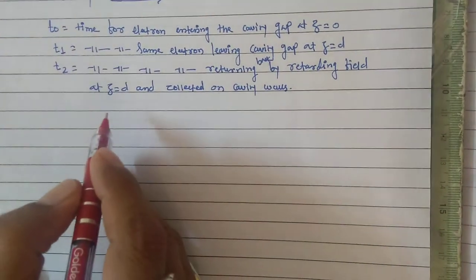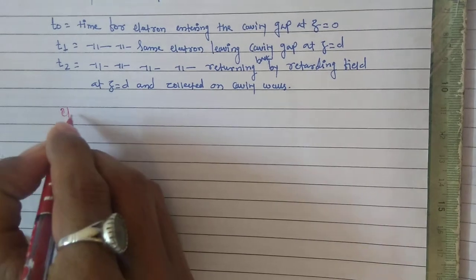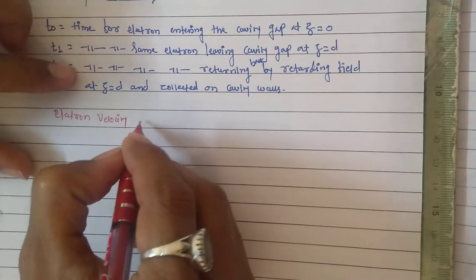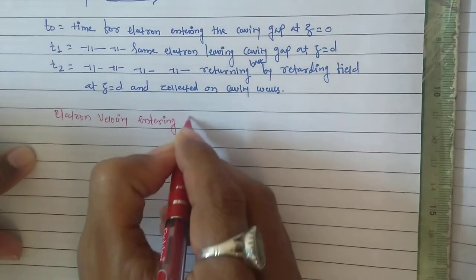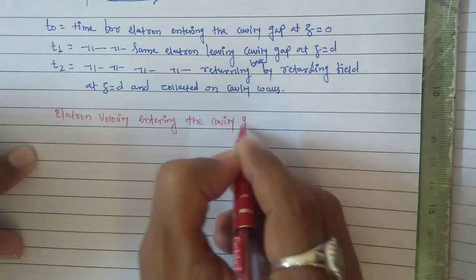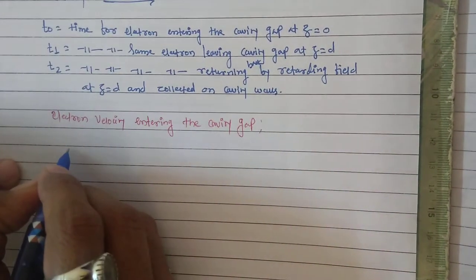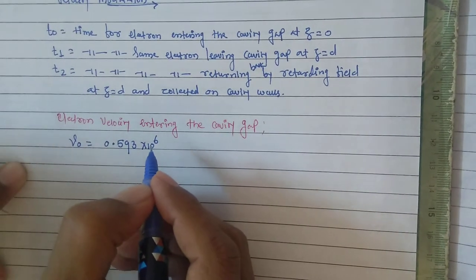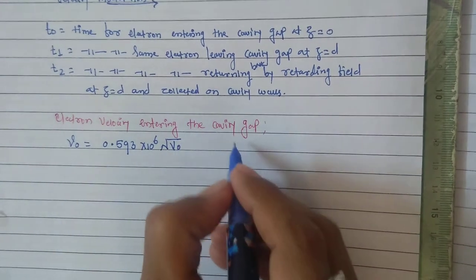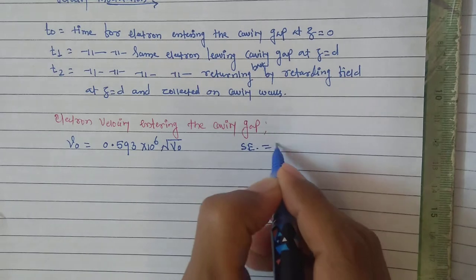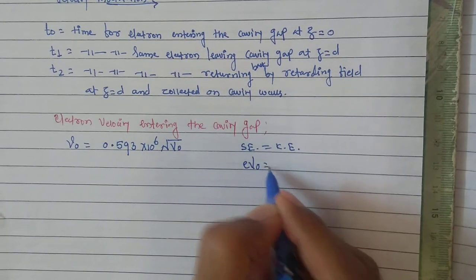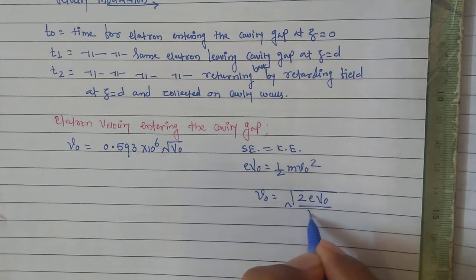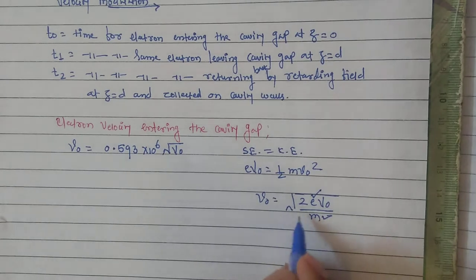Now we will write the electron velocity entering the cavity gap. Electrons have started from the cathode, so the electron velocity before they enter the cavity gap is v0 equal to 0.593 times 10 to the power 6 times the square root of V0. This is obtained from the equilibrium condition: static energy equals kinetic energy, eV0 equals half m v0 squared, therefore v0 equals the square root of 2eV0 over m. Using the constants for electron charge and mass, we get the expression for v0.